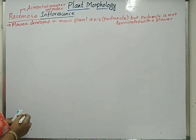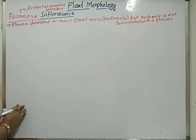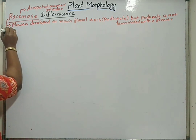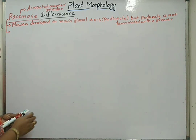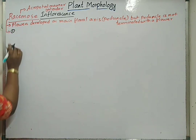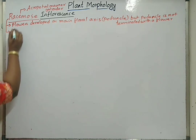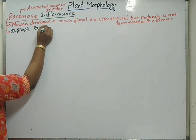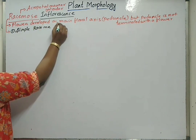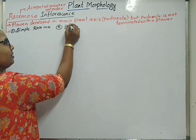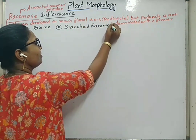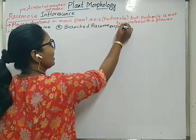The older flowers are at the base region and the young flowers are near the apical region. Under racemose inflorescence, the types are: first, simple raceme; second, branched raceme or panicle type of inflorescence; third, spike type of raceme.